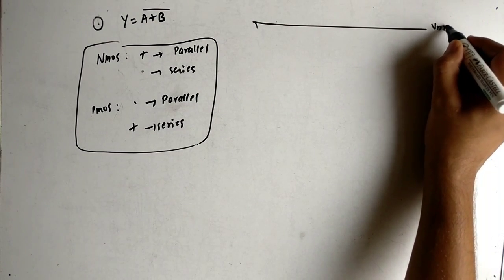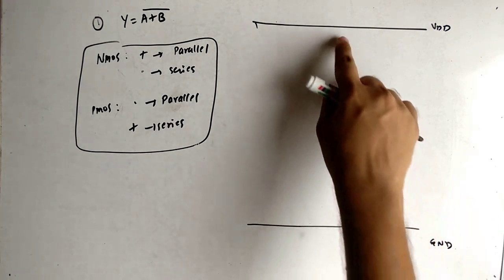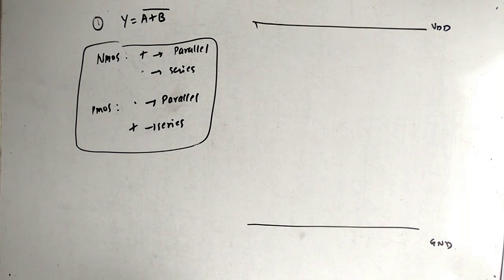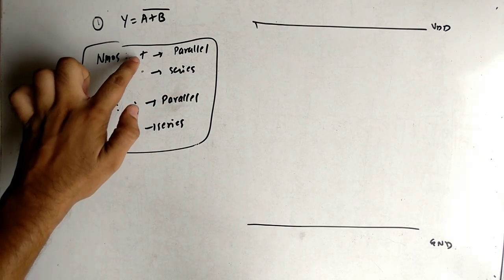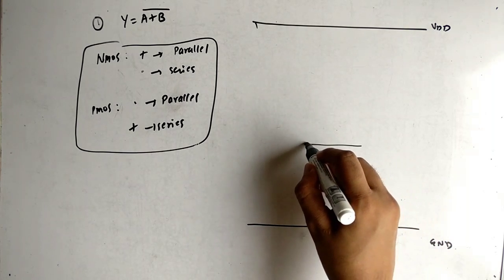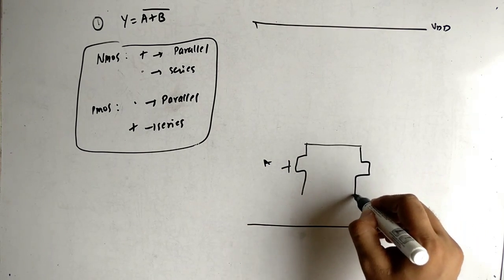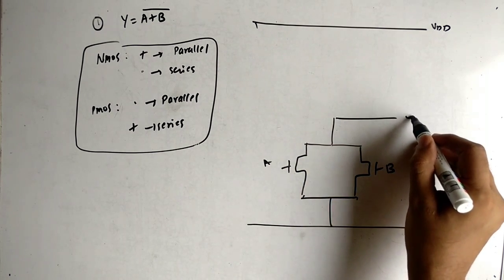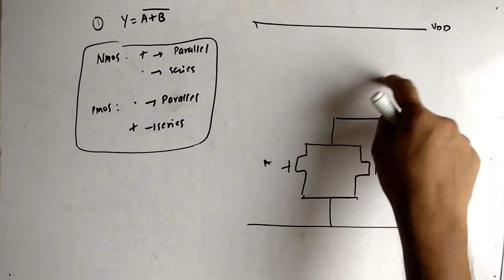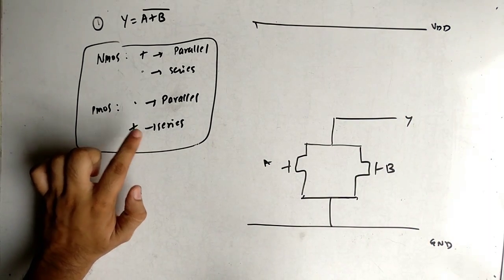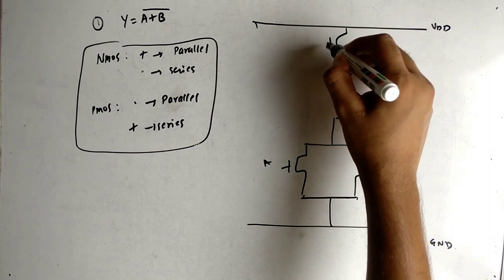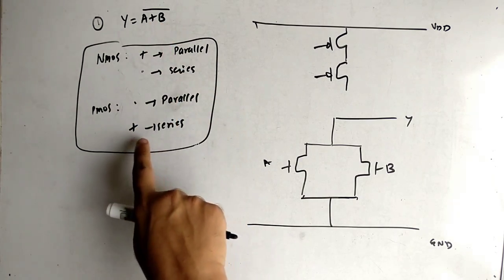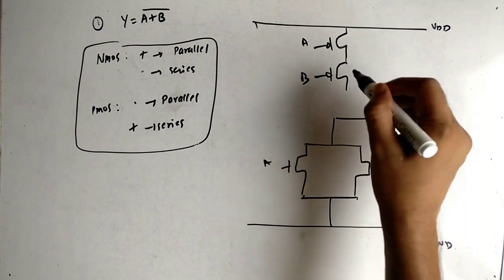Now let's draw the circuit. VDD is at the top, ground is at the bottom. The upper side has PMOS logic and the lower side has NMOS logic, with the output taken from between. For NMOS logic, the terms are added so both will be in parallel — this is A and this is B, with the output at ground. For PMOS logic, when terms are added they are in series, so both PMOS transistors (with bubbles at the gate) are in series: A and B in series, with the output taken out.